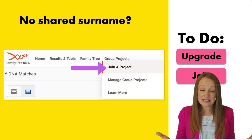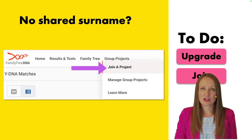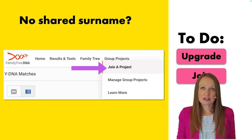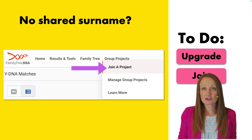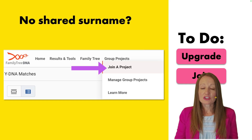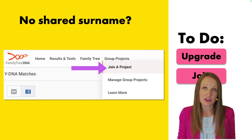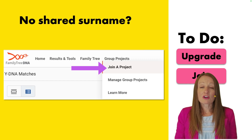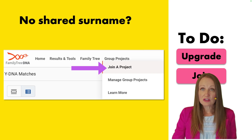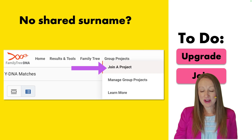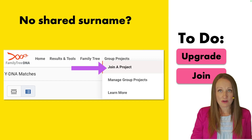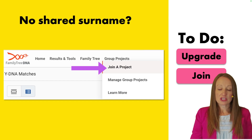Another thing I recommend when you see matches that don't share your surname is to join a family project at Family Tree DNA. Joining a project gives you wider exposure to other people who have tested with your surname, showing you that even people who do share your surname don't always match you. There are usually a lot of resources offered by project administrators, and they're great at answering questions to help you figure out why you might be matching or not matching the people you think you should.